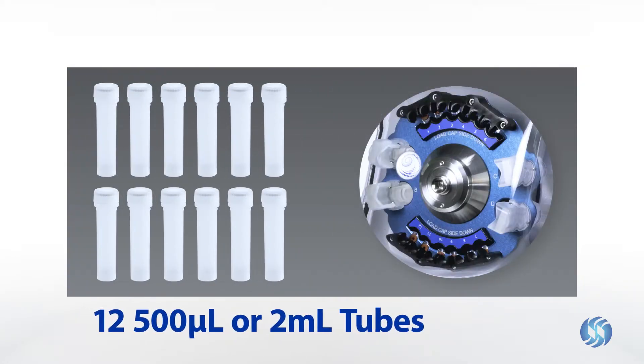The integrated tube carriage can process up to 12 500 microliter or 2 milliliter tubes and 4 7 milliliter tubes in a single run.